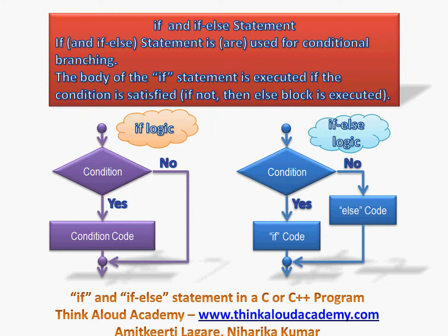If and if-else statements are conditional branching statements in C or C++. The body of if or if-else gets executed if a particular condition gets satisfied. For if, whenever the control reaches the if statement, we check a condition enclosed within the if bracket. If the condition gets satisfied, we execute the conditional code; if not, we simply skip that part. For if-else logic, we first check the condition. If it holds good, we execute the if-code; if not, we execute the else part.